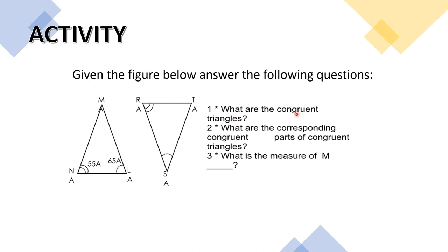So what are the congruent triangles? Number one. We have this triangle N, M, L, and then R, S, T. We have two triangles here. Are they congruent? Let's check.